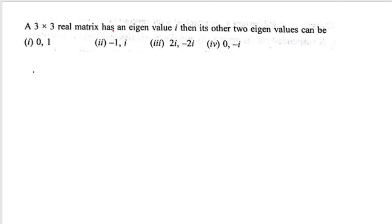A 3×3 real matrix has eigenvalue i. What can its other two eigenvalues be? Eigenvalues are roots of the characteristic equation, and complex roots always come in conjugate pairs. So if i is an eigenvalue, then −i must also be an eigenvalue. Among the options, only one contains −i as another eigenvalue. That option is correct.